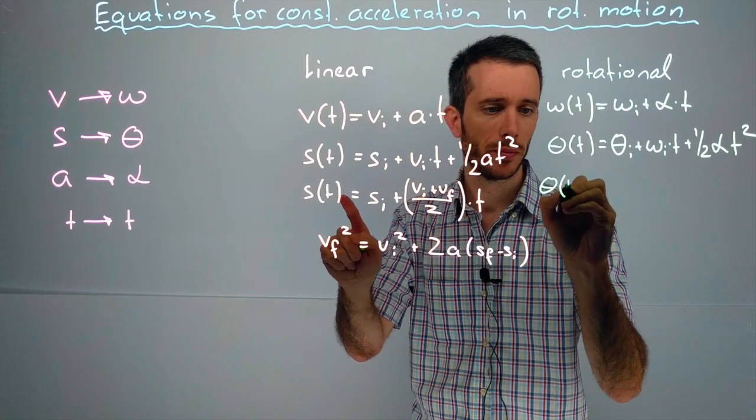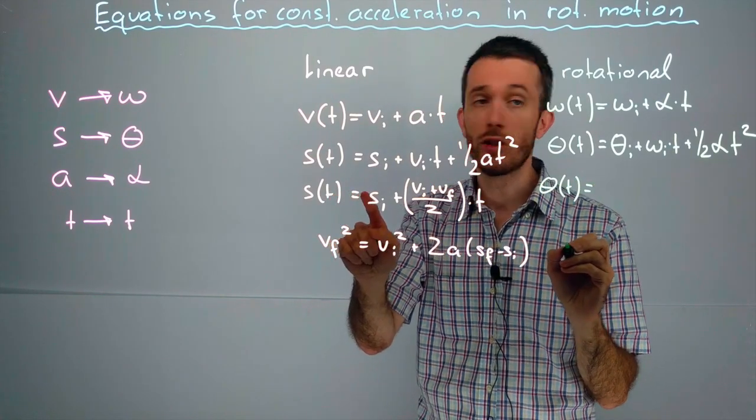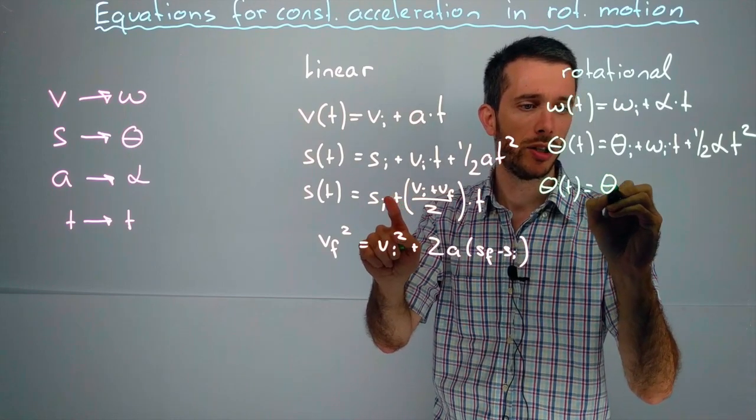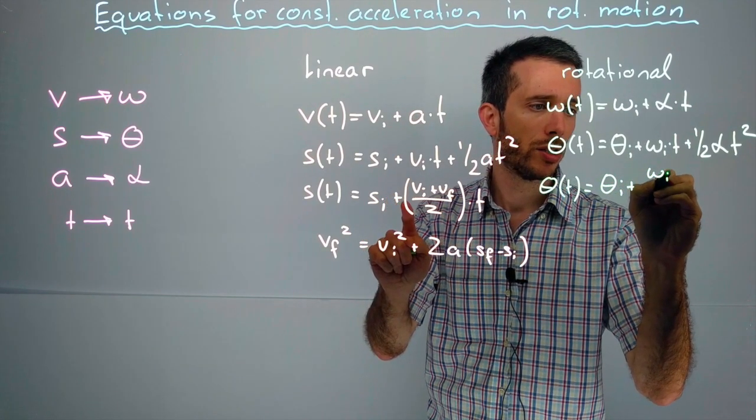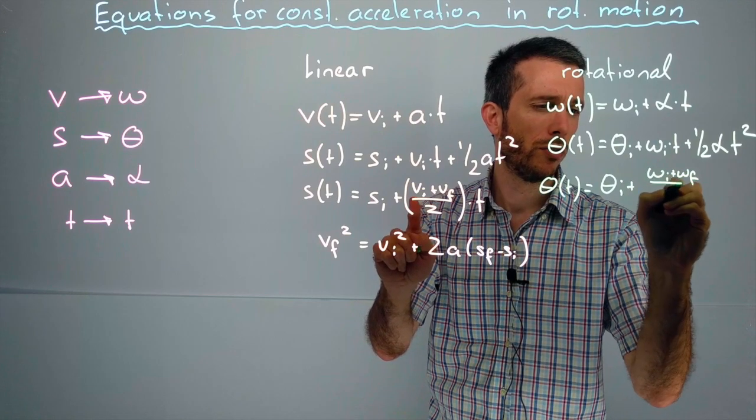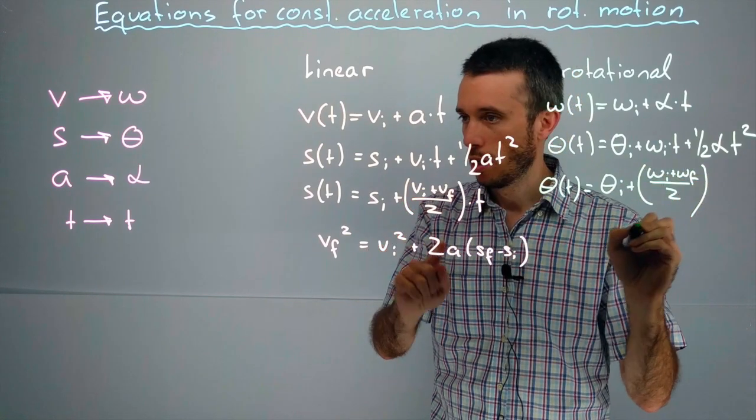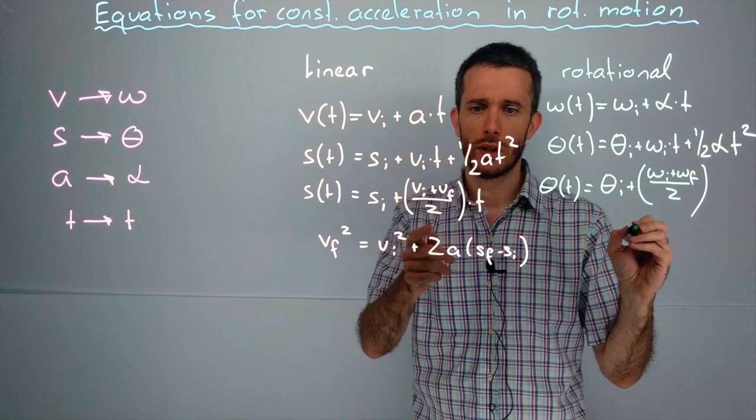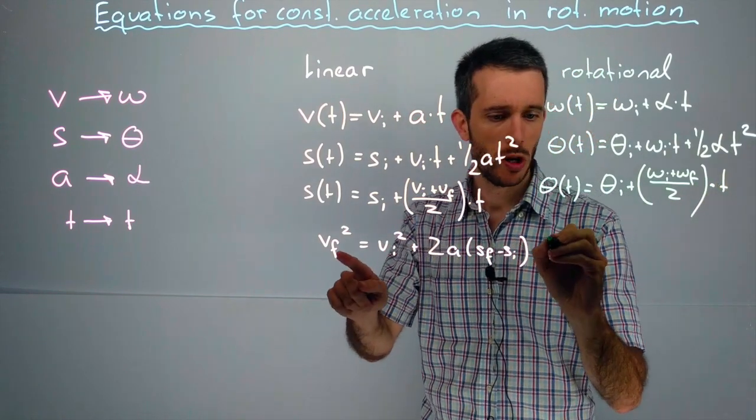The next one. My position as a function of time is, again, my initial position plus omega initial plus omega final over two, which is my average rotational velocity times the time.